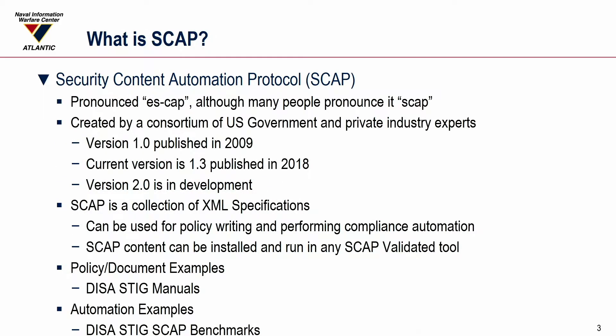So what is SCAP? Security Content Automation Protocol. It's pronounced SCAP, although you may have heard other people pronounce it SCAP. In this video series we're going to try to stick with the NIST-approved pronunciation of SCAP. It was created by a U.S. government consortium of experts and private industry experts — NIST, the NSA, DISA, and numerous commercial companies. The first version was published back in 2009, and the current version is 1.3, which is really where content and tools are right now.